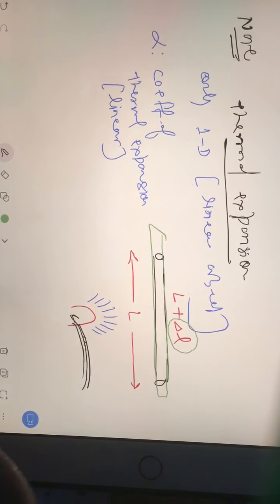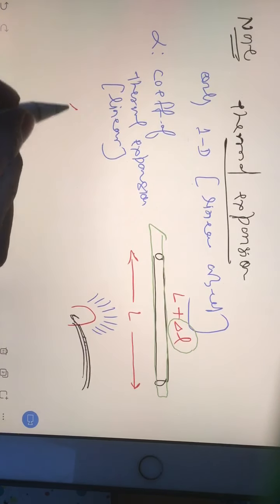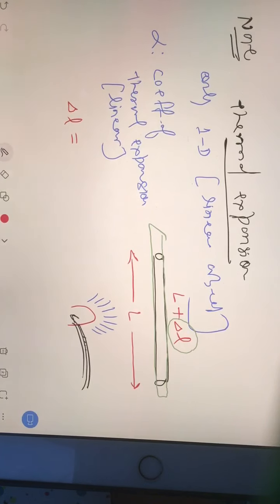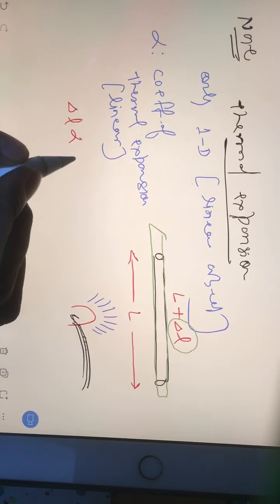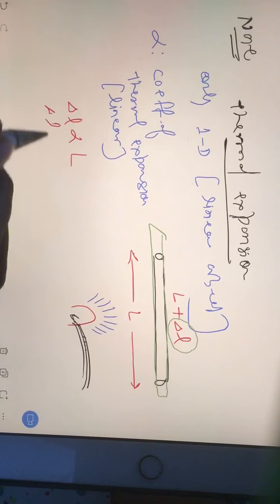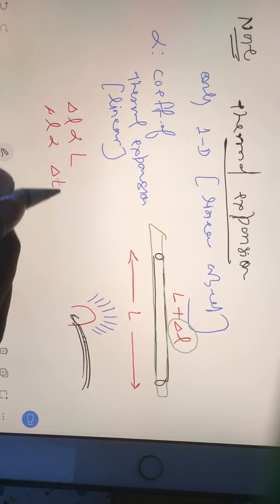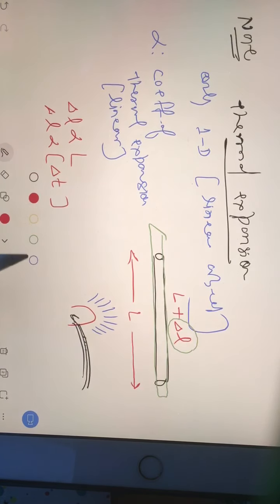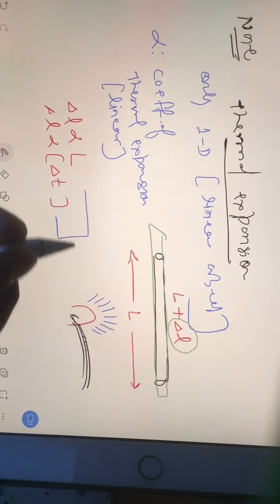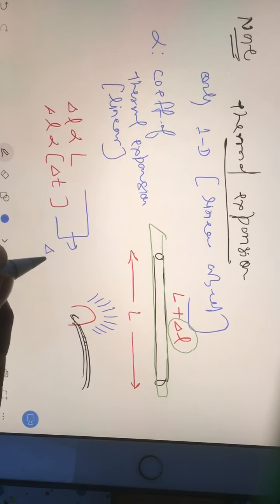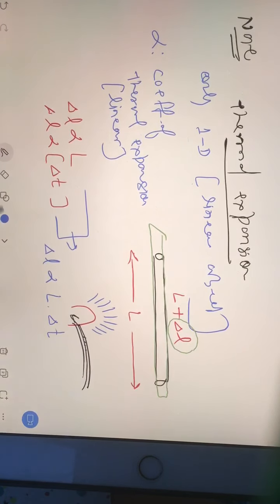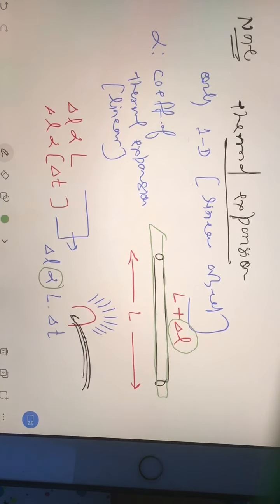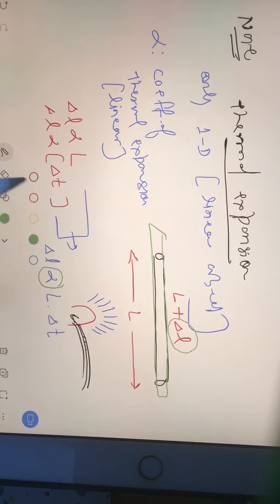your original length, and it used to be proportional to the change in temperature. When you club them together, your change in length is actually proportional to both L into del_T. And when you remove this proportionality sign, then you will be getting